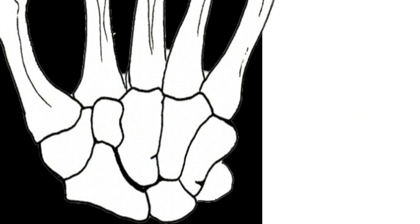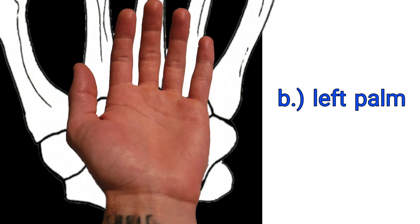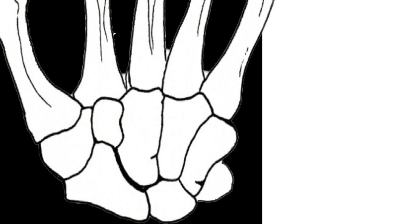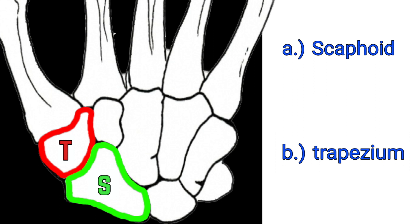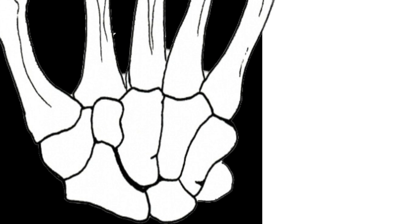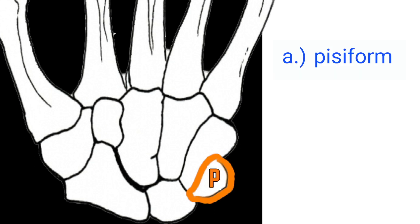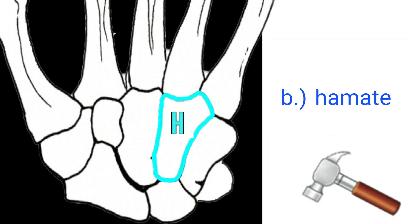Question one: which hand are we looking at? Left palm — you got it. This is important when doing the mnemonic. Question two: which bone does the mnemonic start with? Scaphoid — you got it. Question number three: which bone does the mnemonic end with? Hamate — you got it.